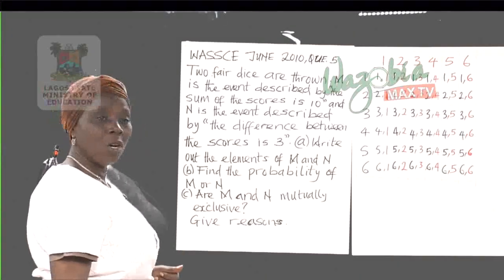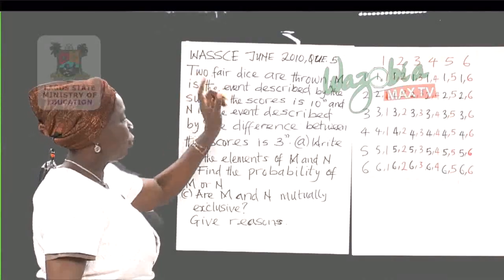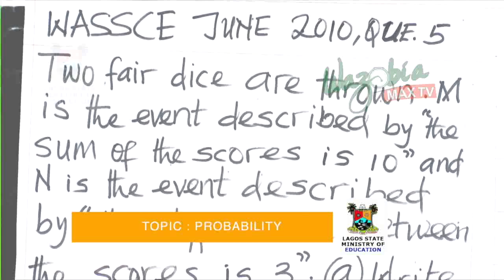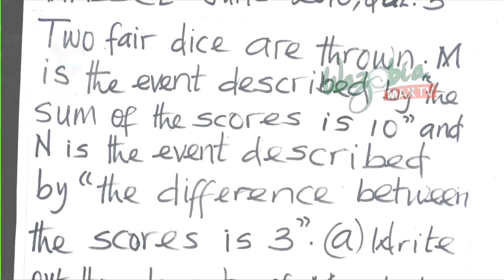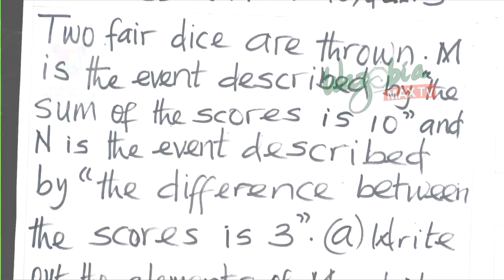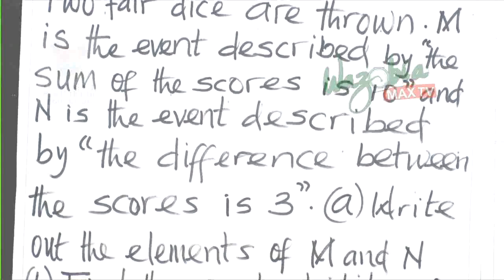Pick your first question booklet and go to WAEC June 2010, Question 5. Two fair dice are thrown. M is the event described by the sum of the scores being 10, and N is the event described by the difference between the scores being 3.